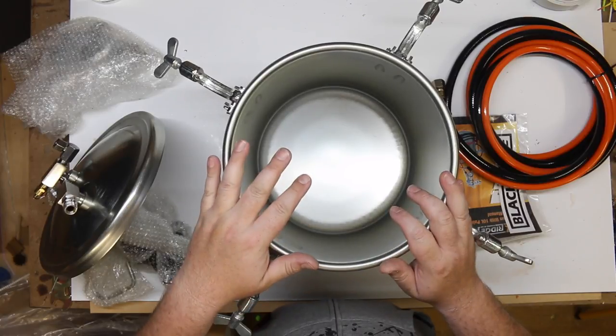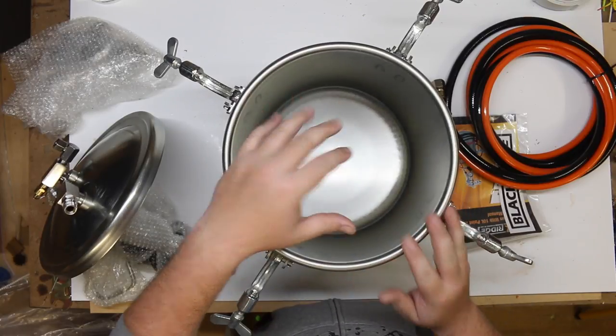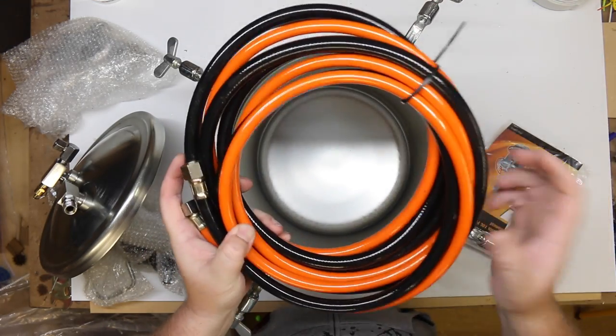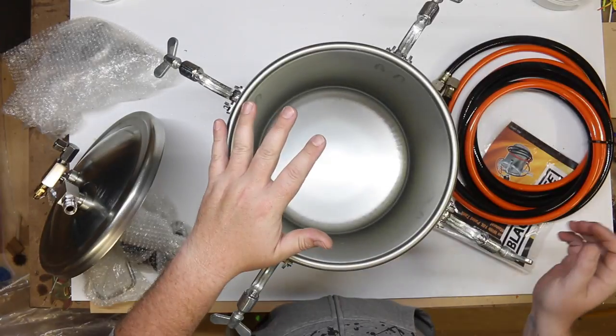So the whole idea of a paint pressure pot is you put 10 liters of paint in there, you hook a compressor up to it, you set your pressure, you run your lines with a gun on the end, and you can spray for ages without needing to refill the pot.